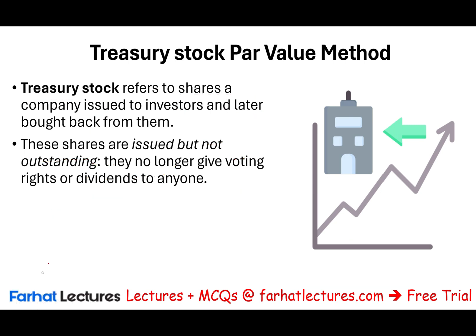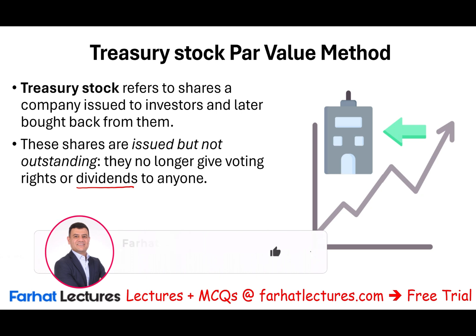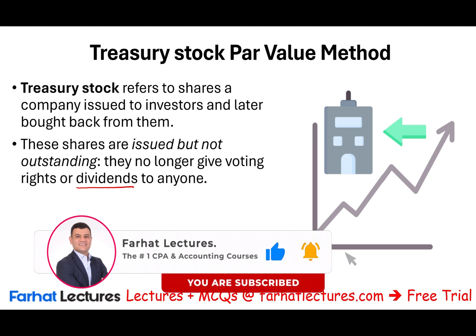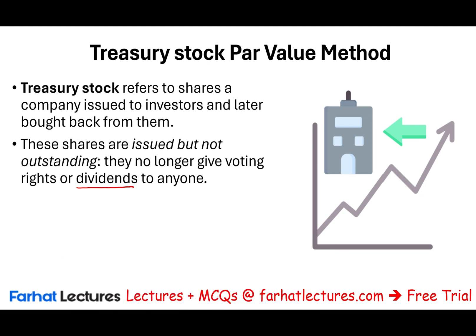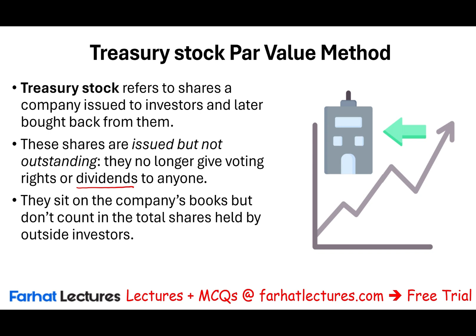Once you buy back those shares, the company doesn't pay itself dividends — paying dividends to treasury shares would be like taking money from one pocket and putting it into the other. It's your own money, just transferring between pockets. The company also doesn't vote, because voting represents the shareholder and the company cannot vote for itself. So these shares sit on the company's books but don't count in the total shares held outside by investors, which is outstanding shares.